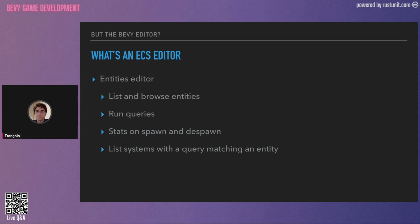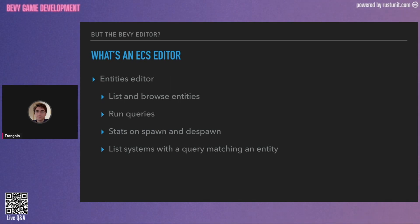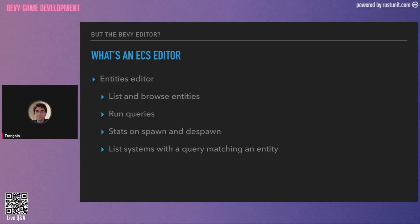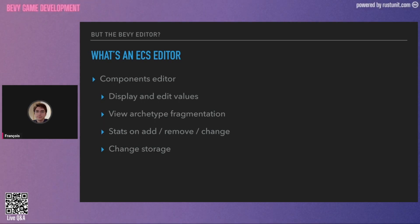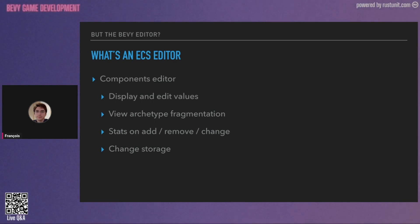What could be an entities editor? It could list and browse entities, run queries, and provide statistics on what's happening in your application — for example, track the spawn and despawn of entities, whether entity IDs are reused, and so on. It would also be very interesting to list systems with a query that matches an entity. What would be a component editor? It would display and edit values, view archetype fragmentation and usage, and provide statistics on add, remove, and change of components.